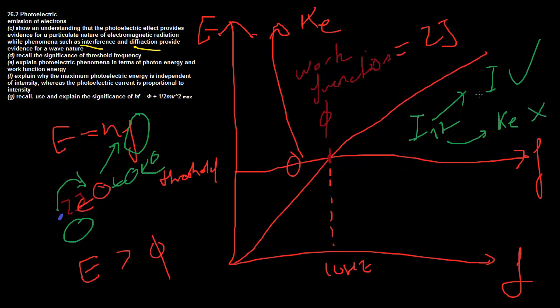The current produced will vary with intensity though. More photons means more electrons are interacted with, so if you are over the work function or threshold frequency, you will have more electrons jumping off just because you have more photons. It's really quite intuitive.